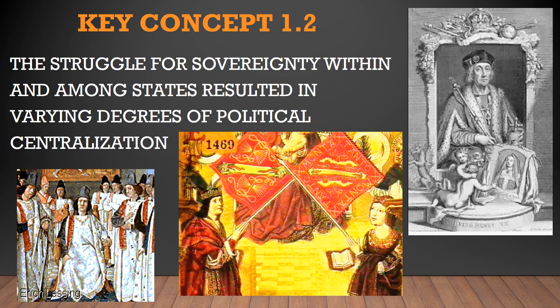Hey, guys. This review lesson focuses on Key Concept 1-2: the struggle for sovereignty within and among European states resulted in varying degrees of political centralization. Essentially, this covers the creation of the new monarchies and the increased centralized governments that were formed in Europe during the late 15th and 16th centuries.